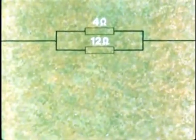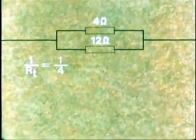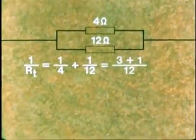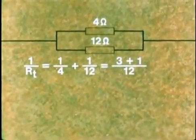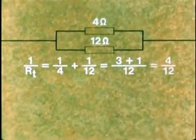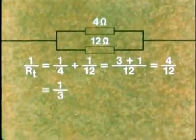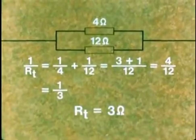Now we can apply the formula to both branches. 1 over RT equals 1 over 4 plus 1 over 12. That equals 3 plus 1 over 12, or 4 over 12, which is 1 third. So RT is 3 ohms.